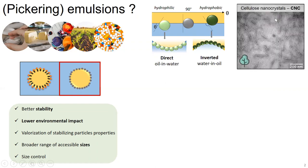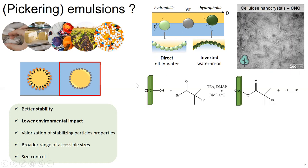In our case, we are working with cellulose nanocrystals, which are not spherical particles but anisotropic particles with a rod shape. They can be extracted from wood, which makes them a renewable resource. However, they are mainly hydrophilic by nature because they bear a lot of hydroxyl functions on the surface.